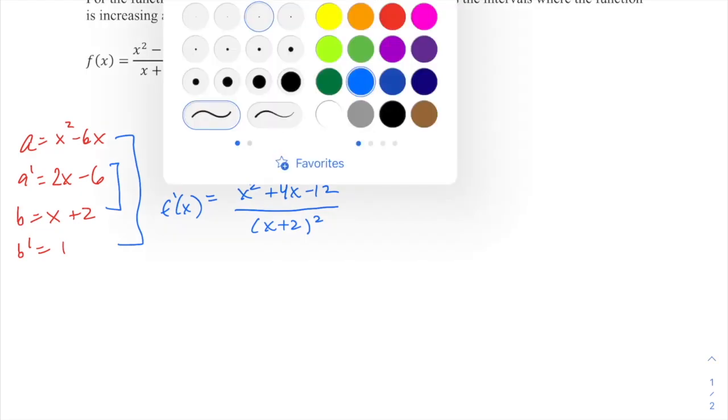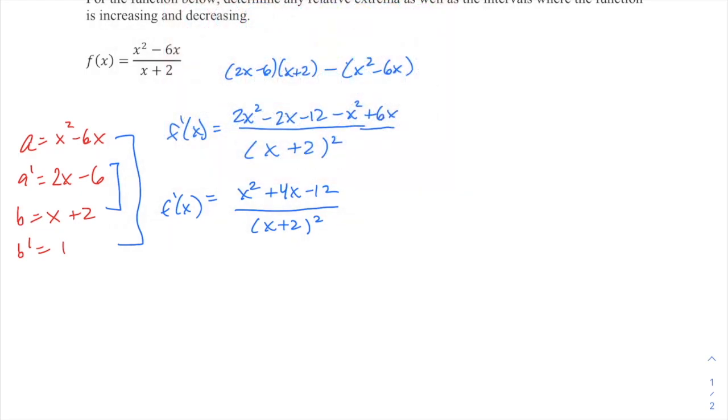However, in determining intervals of increasing and decreasing, it is an important spot where the function doesn't exist. It's a vertical asymptote, a VA. So it's still going to be an important point to consider. So we're going to set that equal to zero to determine where the function is undefined, because at a vertical asymptote, that might be a change in if the function is increasing or decreasing. It's not going to be a relative extrema, but it's still important.